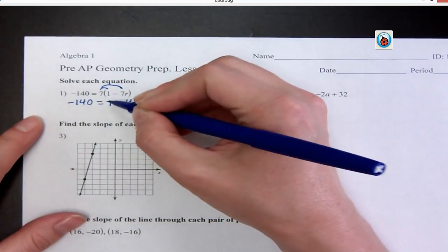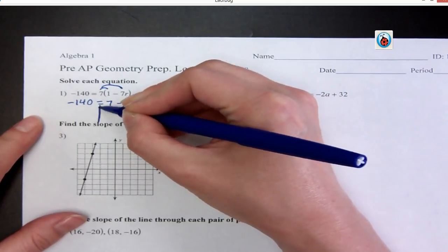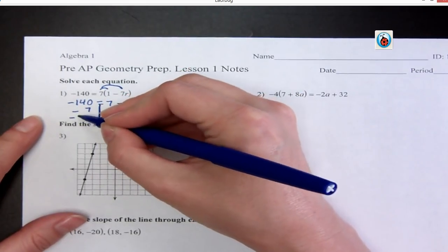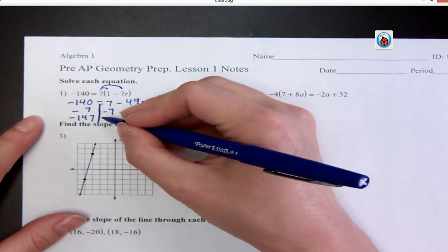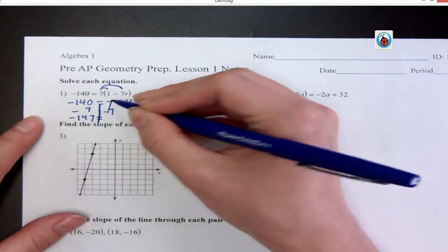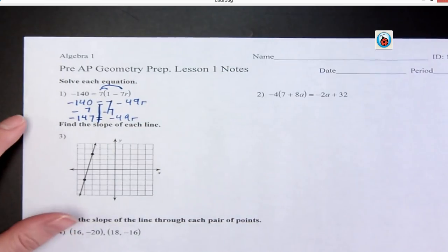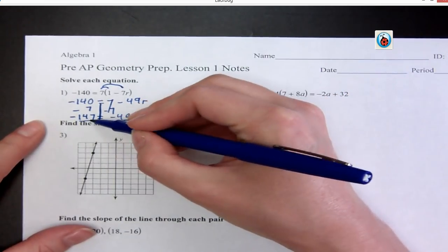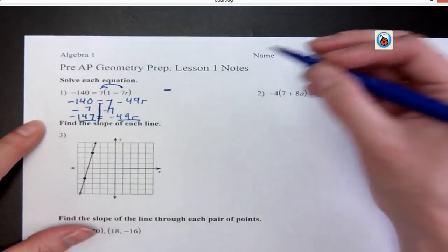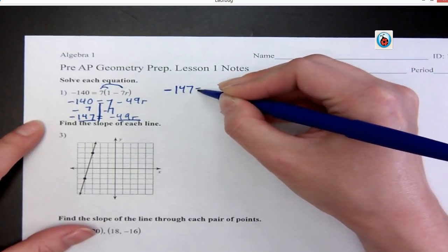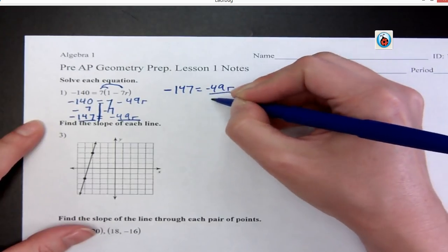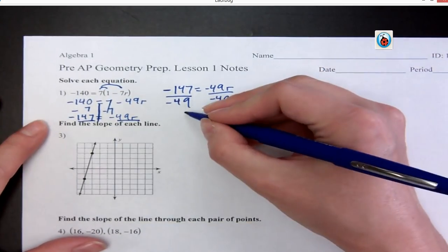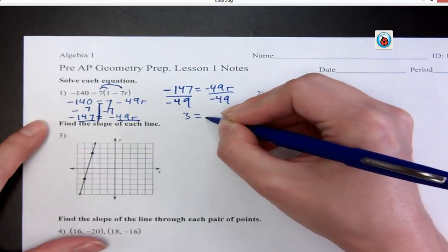Next, we want to move any numbers not attached to the letter over to the other side, so this is our dividing line. It was positive 7, so we do minus 7. That gives us negative 147 equals, those cancel out, so negative 49R. And then our last step is just divide. So, and for space, I'm going to write it out here. We divide by negative 49. You can type that in your calculator, and it comes out to 3 equals R.